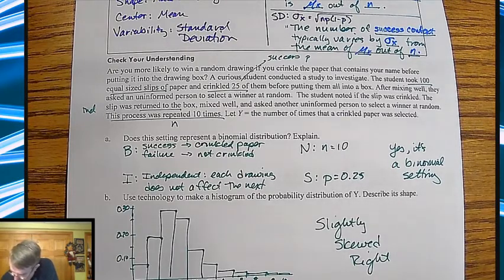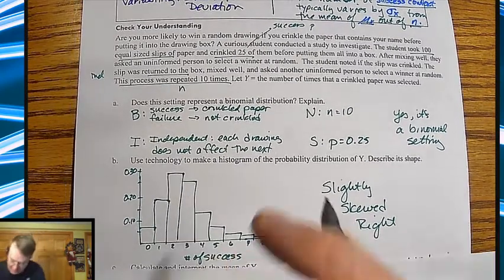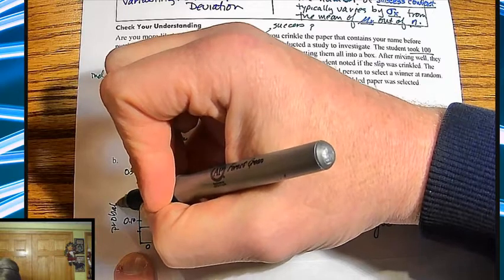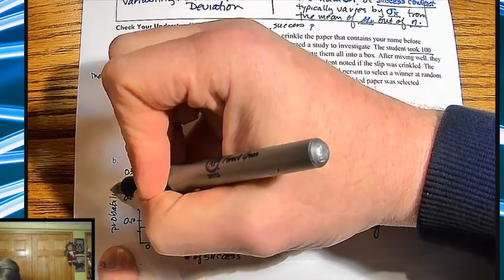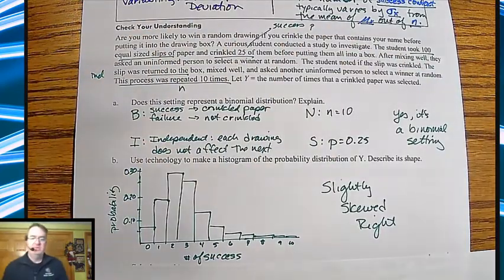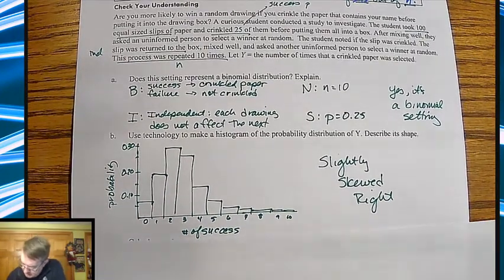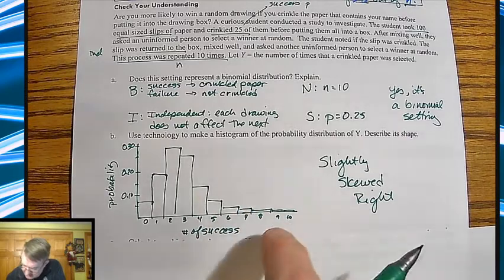In terms of technology, to make a histogram, the staplet's going to be probably your best, easiest way to do it. So again, before I forget, you always want to label your graphs. Probability. It's who wants to marry somebody who doesn't label their graphs, right?